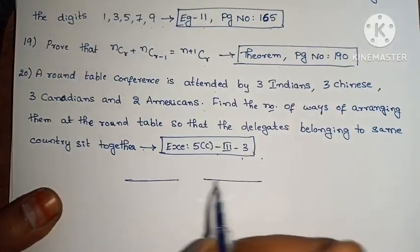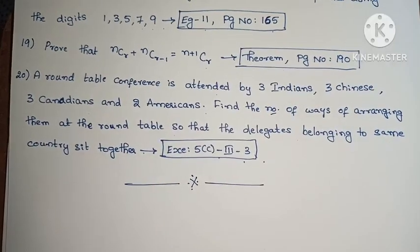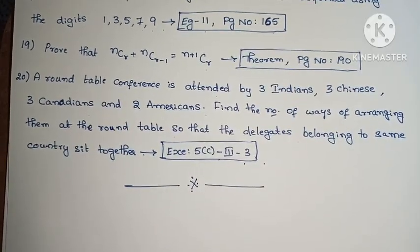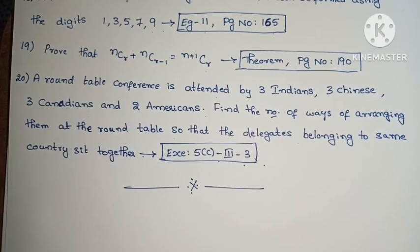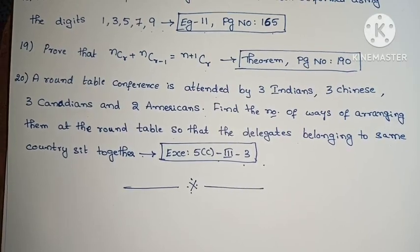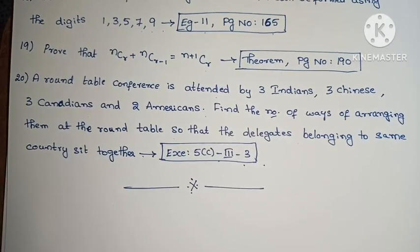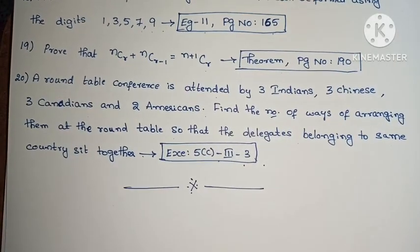The 2-mark and 4-mark important problems for the Permutations and Combinations chapter are now complete. I have already explained the solutions — please open the link in the description below. If you have any doubts, leave them in the comment box. Please like, share, and subscribe to the channel. Thank you.